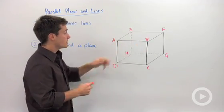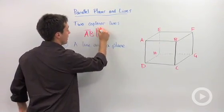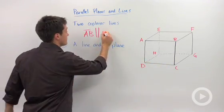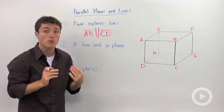I could say that this segment AB is parallel to segment CD. So those would be two lines that are in the same plane that will never intersect.